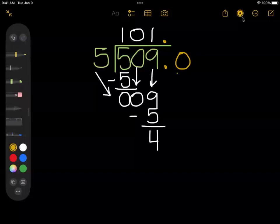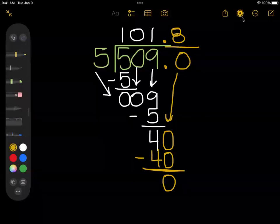5 goes into 40 eight times, so I put the 8 up here. 8 times 5 is 40, and subtract it and I would get zero left over. So now that I have no remainder and I don't have any more numbers to bring down, that means I'm finished. My answer here would be 101.8.